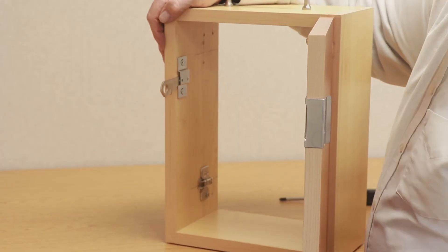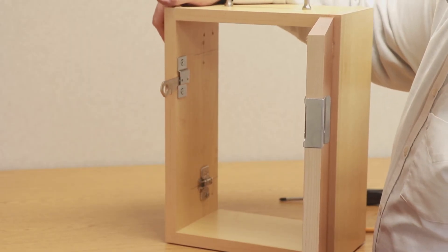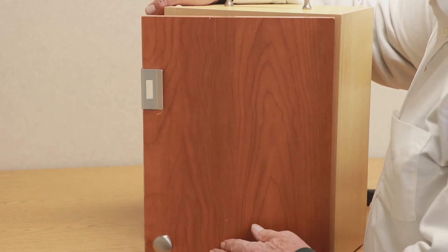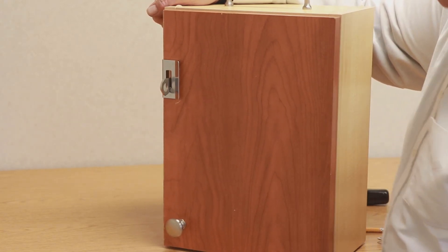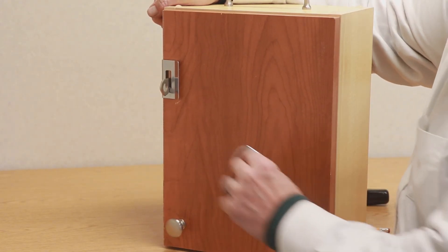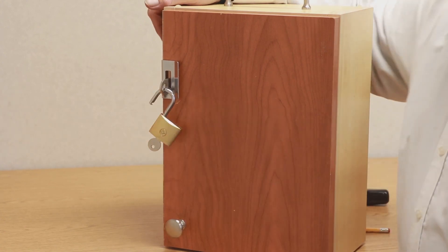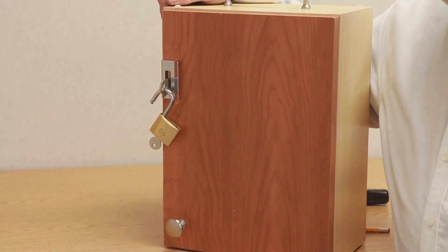The door is attached to the cabinet. On our box-style cabinet, we simply shut the door, and then put in our lock, and now we have a secure cabinet.